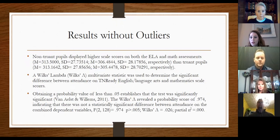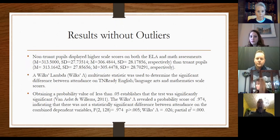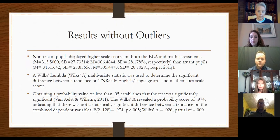Just like with the first MANOVA, the non-truant students still displayed higher scale scores on the ELA and math than their truant peers. However, the margin was very small, so removing those outliers made a big impact on those numbers. Running the Wilks' Lambda again, there was still no statistically significant difference — the target was 0.05 and the result was 0.974.